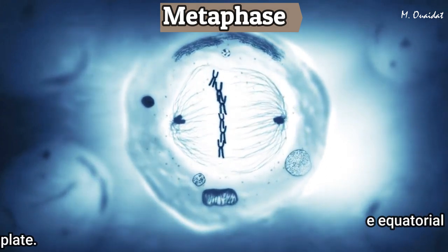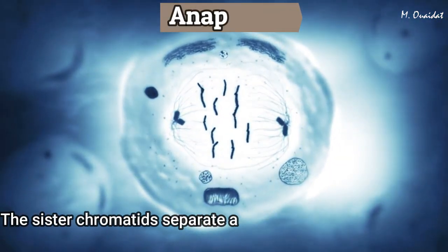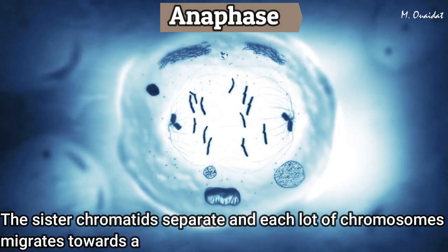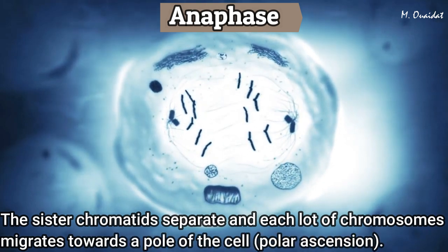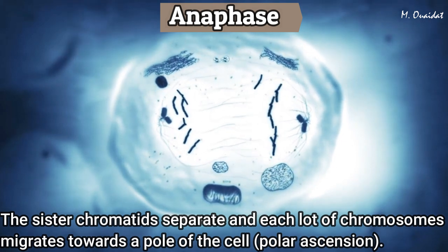In anaphase, the sister chromatids of each chromosome separate, and each lot of chromosomes migrates towards a pole of the cell. This is the polar ascension.